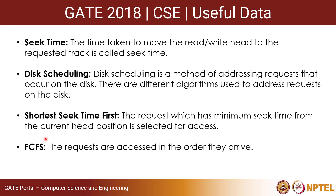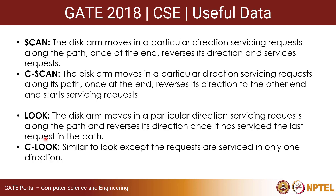First come first serve (FCFS) processes requests in the order they arrive. In the SCAN algorithm, the disk arm moves in a particular direction, servicing requests along that path. Once it reaches the end, it reverses direction and services requests in the opposite direction. In C-SCAN, the disk arm moves in a particular direction serving requests along its path, and once it reaches the end, it reverses direction, comes back to the other end, and then starts servicing requests again.